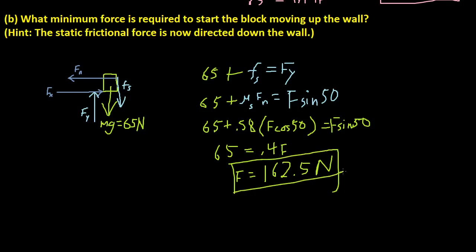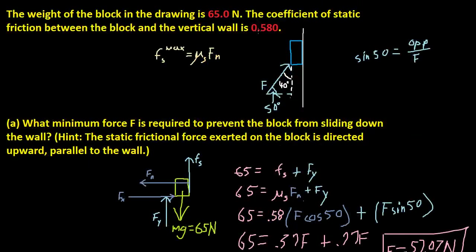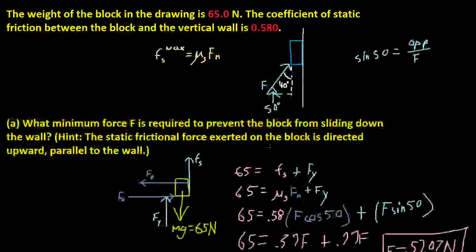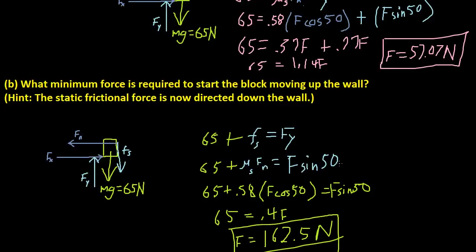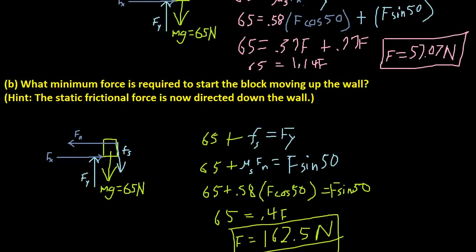So if we solve for force, we get 65 divided by 0.4, so we divide 0.4 by each side, so we get 162.5. So that is the answer for number B, or part B. And you will have a different answer than this if you got different numbers. These are the correct answers because I've checked on my website. So these are proven methods. Good luck on your website, and I hope this helped.